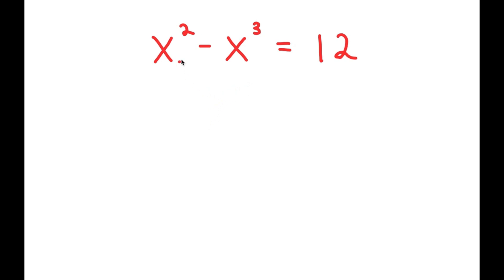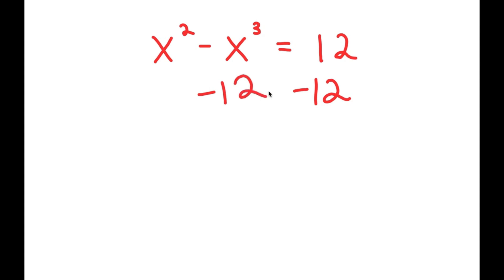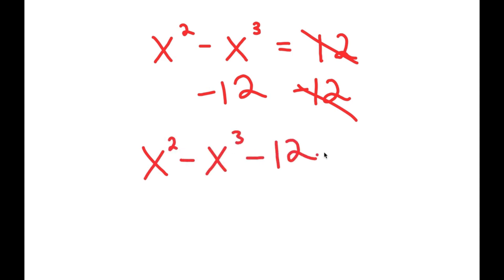In this problem, I have x squared minus x to the power of 3 is equal to 12. To solve this, I'm going to first start by subtracting 12 on both sides. So these two cancel out and I get x squared minus x to the power of 3 minus 12 is equal to 0.